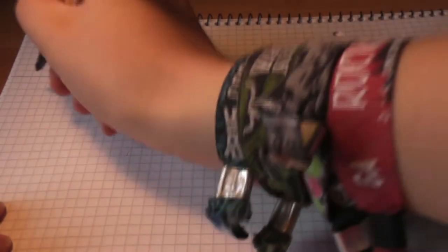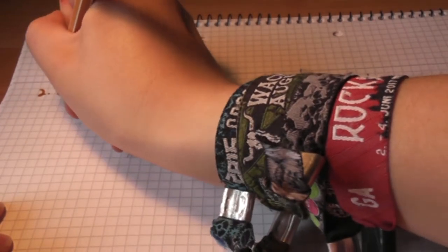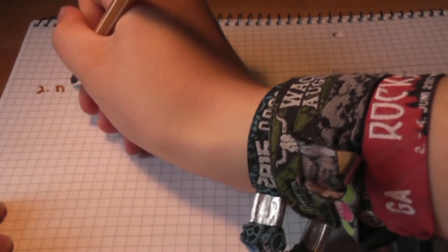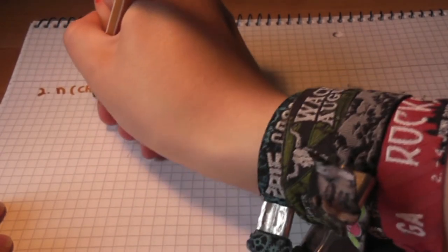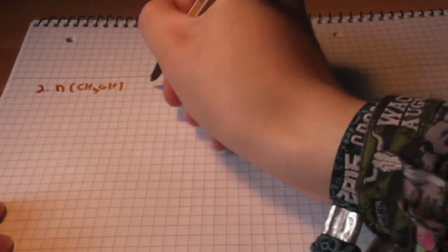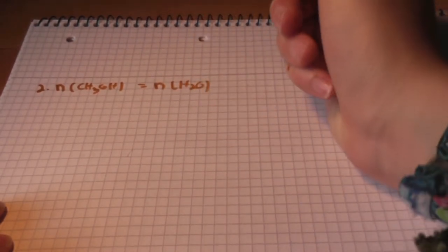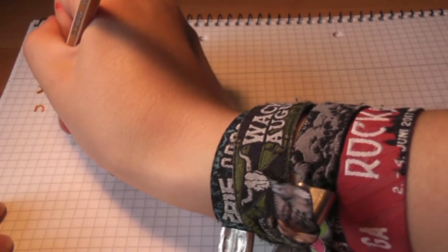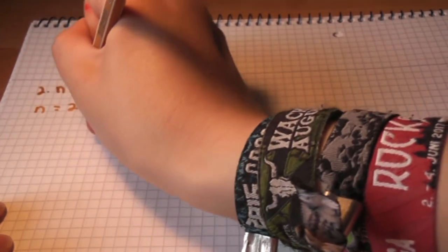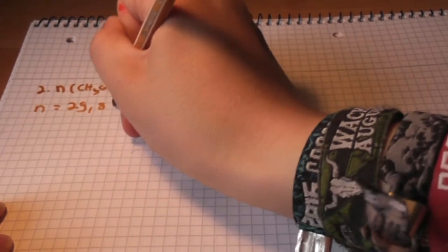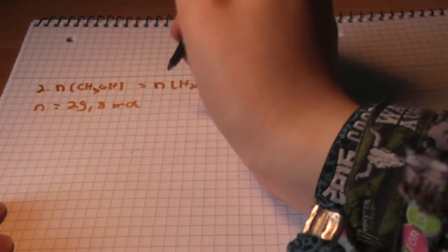Now we calculate how much water we get. So 2 times the amount of substance of methanol is the amount of substance of water. So we have 29.8 mole of water.